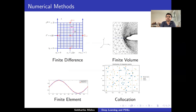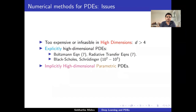However, there are some serious issues with these methods. One such issue is the question of high dimensionality. In particular, if your PDE is high dimensional, then it is either too expensive or infeasible to use these numerical methods to compute solutions. By high dimensionality, I mean that the total dimension has to be greater than four — remember that space-time is four dimensional. So where do these high-dimensional PDEs come from?